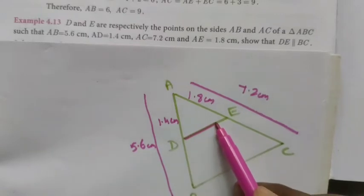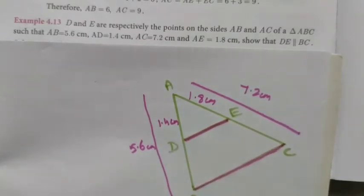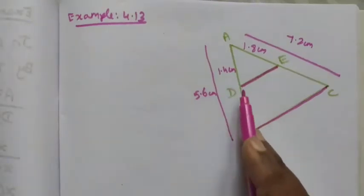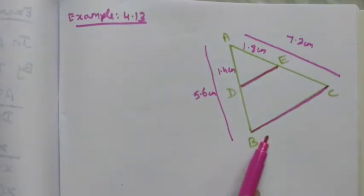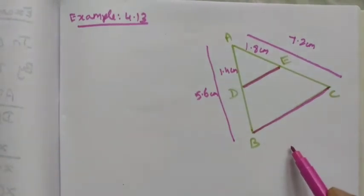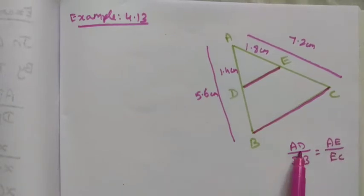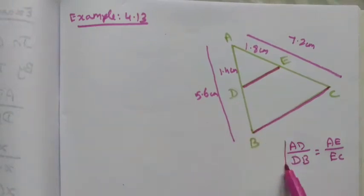We want to show that DE is parallel to the line BC. To prove this, we first need to show that AD divided by DB is equal to AE divided by EC. If these two ratios are equal, then we can say DE is parallel to BC; otherwise it is not parallel.